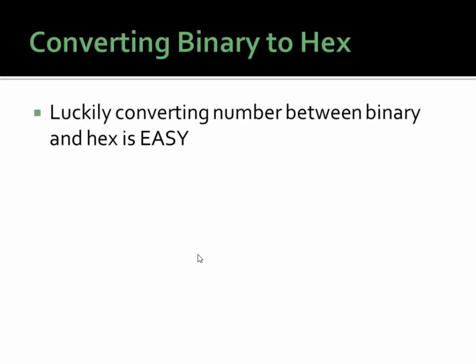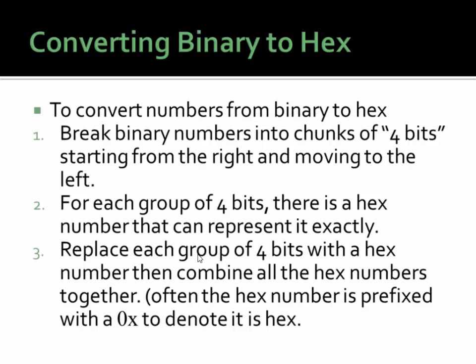Luckily, converting a number between binary and hex is very, very easy. To convert numbers from binary to hex, all you have to do is break the binary number into chunks of four digits, or four bits — each binary digit is called a bit — starting from the right and moving to the left. For each group of four bits, there is exactly one hex number that can represent it. If there's not enough digits to make four bits, just add zeros to the left until you have exactly four. You replace each group of four bits with a hex number, then combine all the hex numbers together. We generally prepend it with 0x to note that it's hex, as opposed to decimal, because sometimes it's hard to tell a hex number from a decimal number if you don't have any of the A through F digits in there.